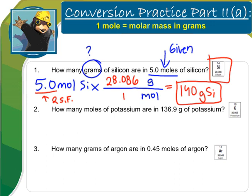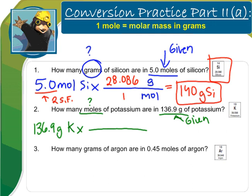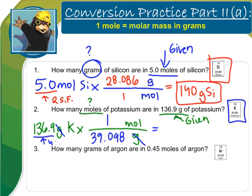Let's try another: how many moles of potassium are in 136.9 grams of potassium? This is my given, and my unknown is how many moles. So I start with 136.9 grams of potassium. This time, grams have to be on the bottom and moles go on top, because I want the units of grams to cancel. Looking up potassium on the periodic table, I find that in one mole of potassium I have 39.098 grams. Putting this in my calculator and rounding to four sig figs, I end up with 3.501 moles of potassium.